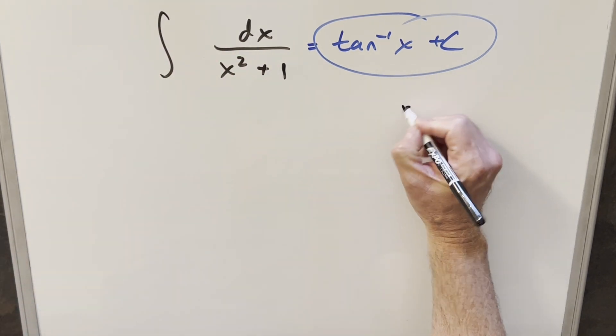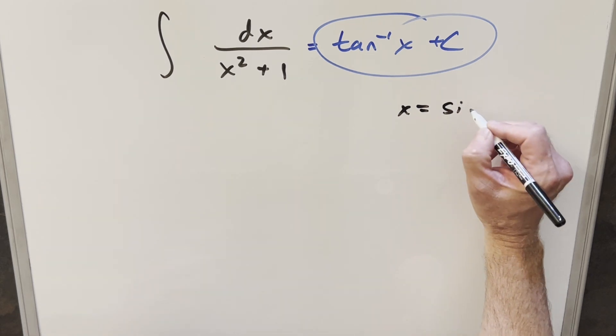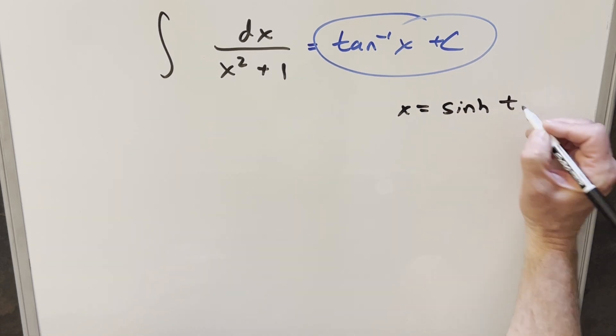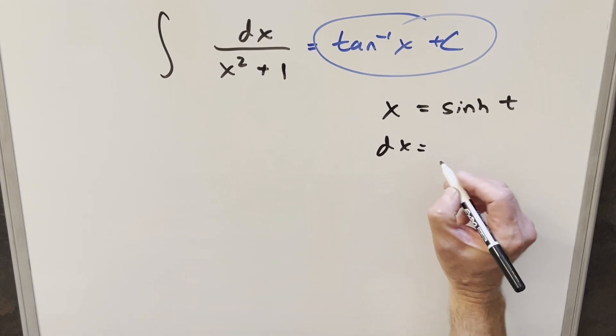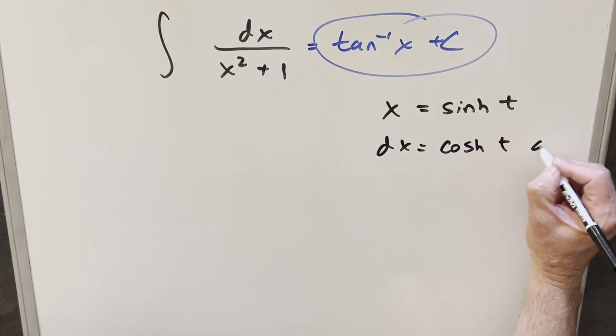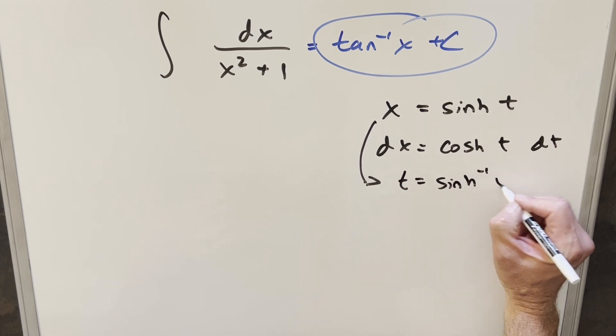But for me, what I want to do instead is let's do a trig substitution on this. And what I can do is substitute x with hyperbolic sinh of t. I'll go ahead and take a derivative on this, get our dx value. This is just going to be cosh t dt. And then I can also get a value to isolate t, just taking the inverse sinh on both sides. So we can say t is going to be the same as inverse sinh of x.